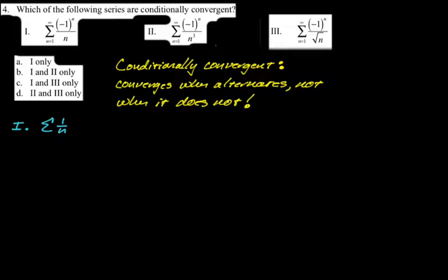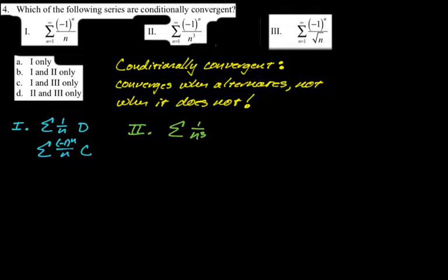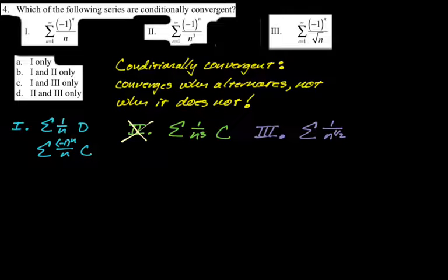Series one: absolute value gives 1/n, the harmonic series, which diverges. But the alternating harmonic series famously converges — so that's conditionally convergent. Series two: absolute value gives 1/n³, a p-series with p=3 > 1, which converges — so it's absolutely convergent, not conditionally. Series three: absolute value gives 1/n^(1/2), p=1/2 < 1, diverges. Since the alternating version does converge, this is conditionally convergent. So the answer is 1 and 3, which is C.